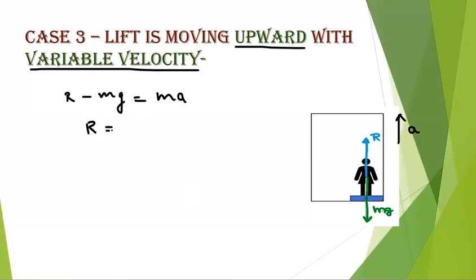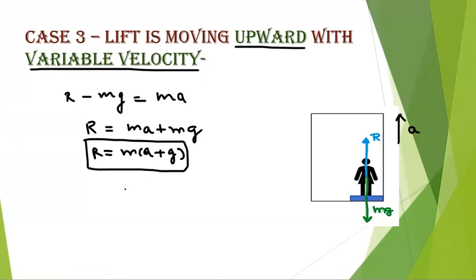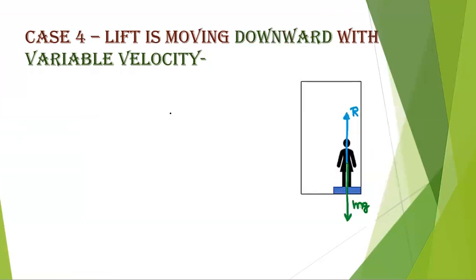What is apparent weight now? R equals MA plus Mg, or R equals M times (G plus A). So this equation shows that apparent weight of body will get increased, because here we can see acceleration due to gravity plus acceleration of lift mass system.